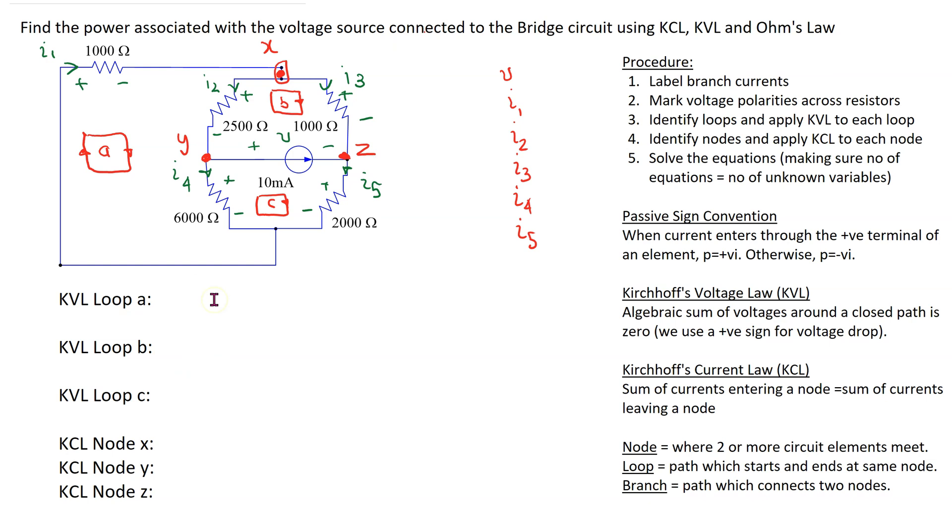So first let's apply Kirchhoff voltage law to loop A. Recall that Kirchhoff voltage law states that the algebraic sum of voltages around a closed path is zero and we use passive sign convention in writing the KVL terms. So starting here for this loop A going from plus to minus is a voltage drop and we use Ohm's law to write the value of this voltage drop which is 1000 I1. Next is another voltage drop, so this is 2500 I2 and finally we have a third voltage drop, so this is 6000 I4 equals zero.